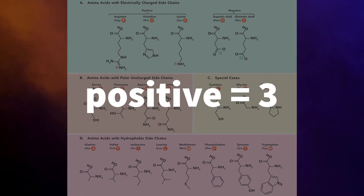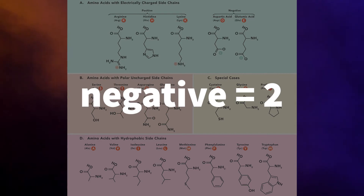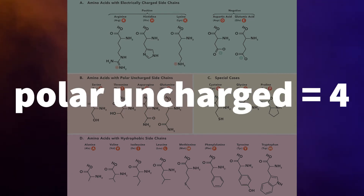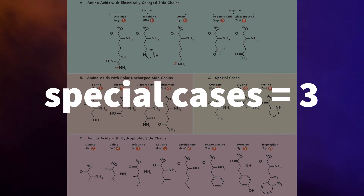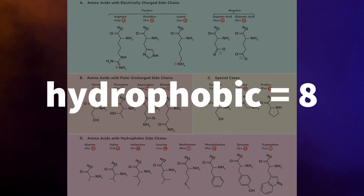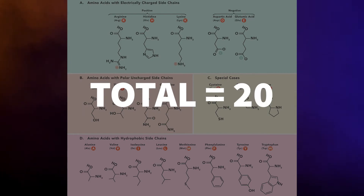For example, in the positive group we have three amino acids. In the negative group we have two amino acids. Polar uncharged amino acids we have four. And for special cases we have three. And for the hydrophobic amino acids we have a total of eight, all adding up to 20 amino acids.